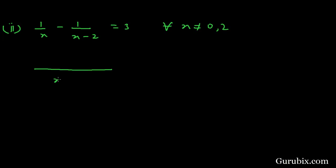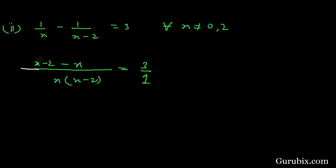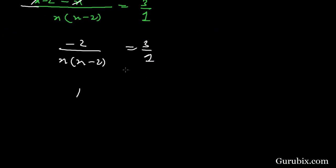We shall take the LCM of the left-hand side, which is x times (x minus 2). Dividing x(x minus 2) by x gives x minus 2, and dividing x(x minus 2) by (x minus 2) gives x. The positive x and negative x cancel out, leaving minus 2 over x(x minus 2) equals to 3.